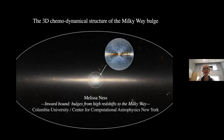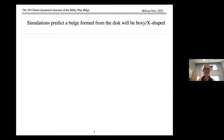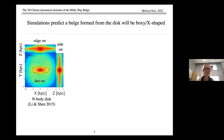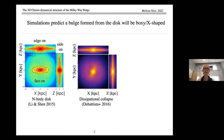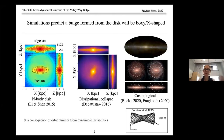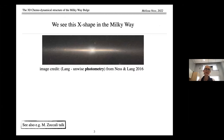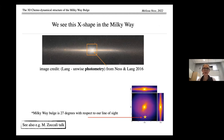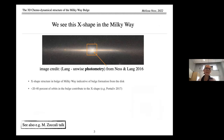There's been a lot of context already presented in preceding talks. Simulations predict that a bulge formed from the disc will be boxy or X-shaped — seen in N-body simulations showing face-on, edge-on, and side-on views forming a boxy or peanut bulge, in dissipation or collapse simulations with similar morphology, and in cosmological simulations. This is a consequence of orbit families from dynamical instabilities. Between 20% to 40% of orbits in the bulge contribute to this X-shaped structure.